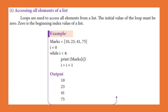Now we set the starting value in the iteration: i equal to 0. The while loop condition is i less than 4. So the loop starts at 0. We print marks of i, where i is the index value. Then i equals i plus 1 to increase the value. The loop continues until the condition becomes false.